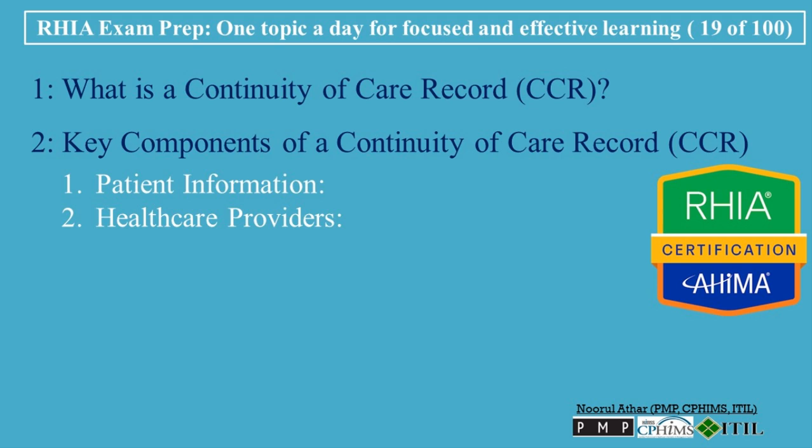Health Care Providers: The CCR lists all the healthcare providers who are currently treating or have recently treated the patient. This ensures that everyone involved in the patient's care is aware of the other providers, facilitating better communication and coordination. Medical History: A detailed medical history is a critical part of the CCR, including information about the patient's past and current diagnoses, surgical history, allergies, and any chronic conditions.